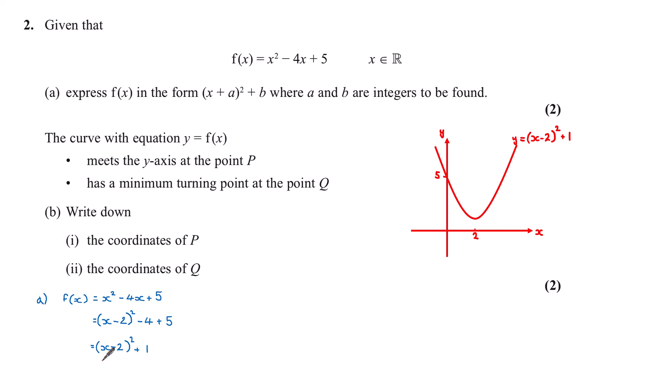I take the opposite sign to the number in the bracket. So the x-coordinate will be 2, and the y-coordinate will be 1. So this coordinate here would be 2, 1. This allows me to sketch this graph of y equals x minus 2 all squared plus 1.